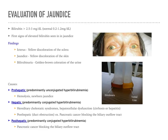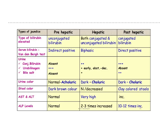Causes of jaundice include pre-hepatic — such as hemolysis or jaundice of the newborn — hepatic, which includes hereditary cholestatic syndromes and hepatocellular dysfunction such as cirrhosis or hepatitis, and post-hepatic, which could include pancreatic cancers blocking the biliary outflow tracts. The next two slides provide charts you may want to keep available when looking at jaundice, with a breakdown of causes and diagnostic findings.